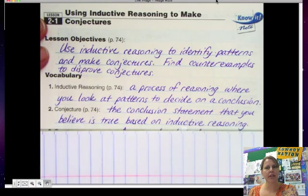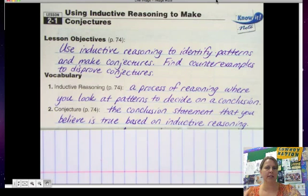A conjecture is the conclusion statement that I believe is true based on my inductive reasoning. So in my example, my conjecture is, I'm pretty sure that he's going to have pizza on Friday. That is my conjecture.